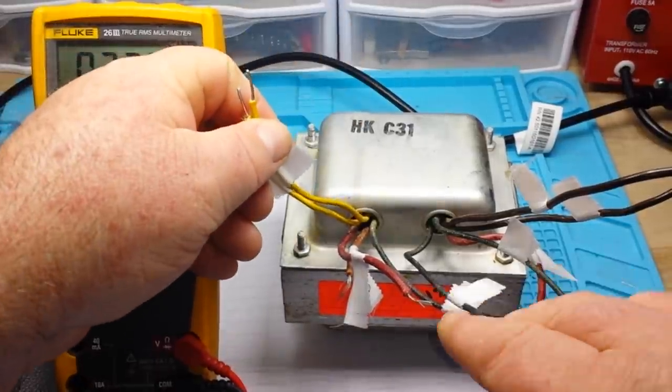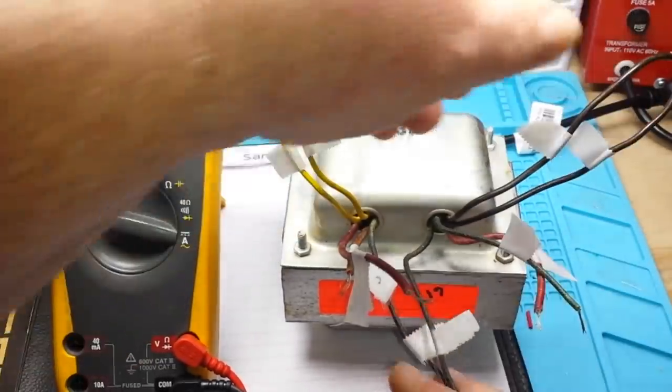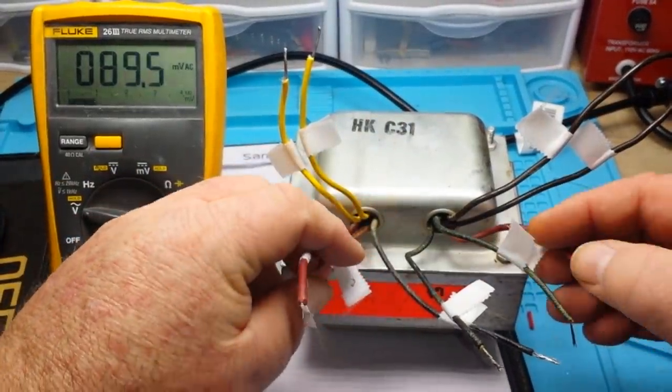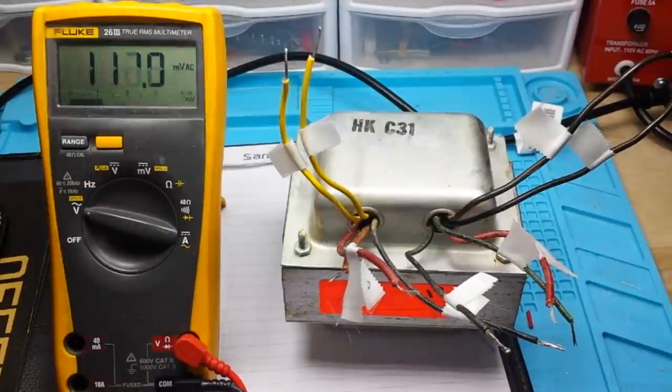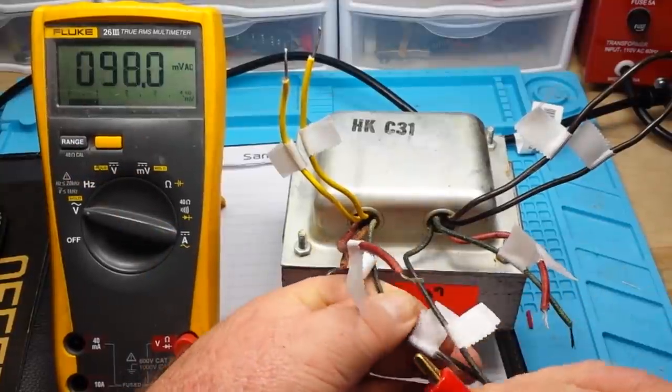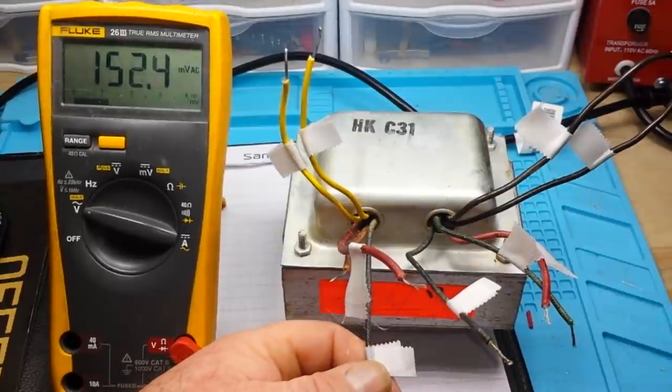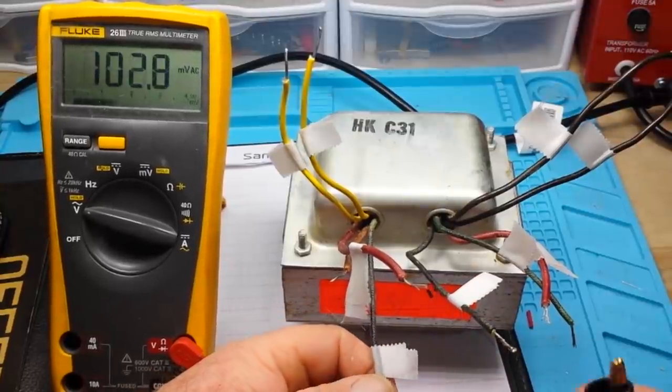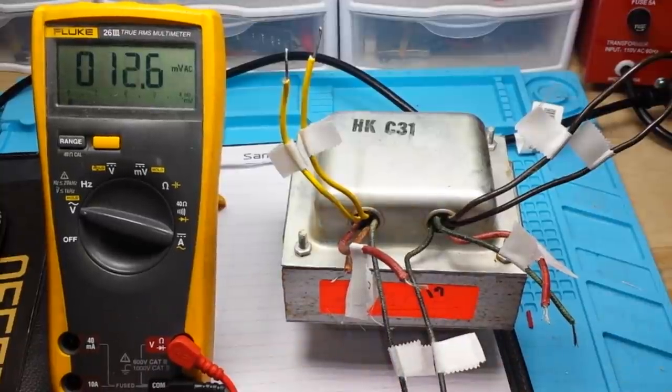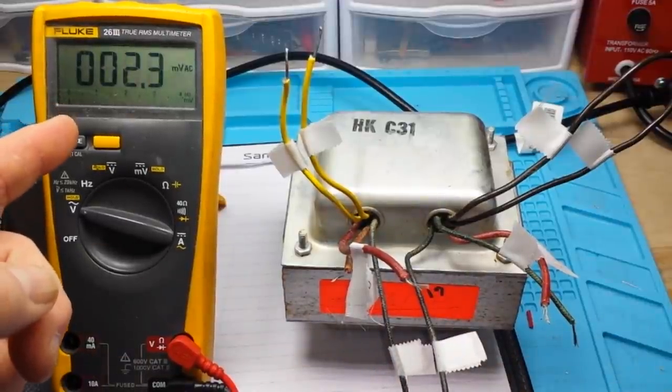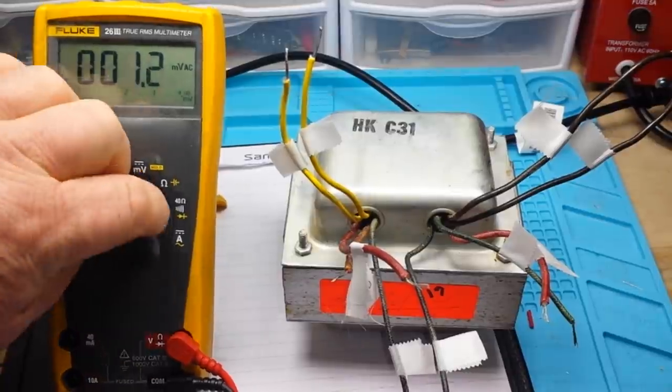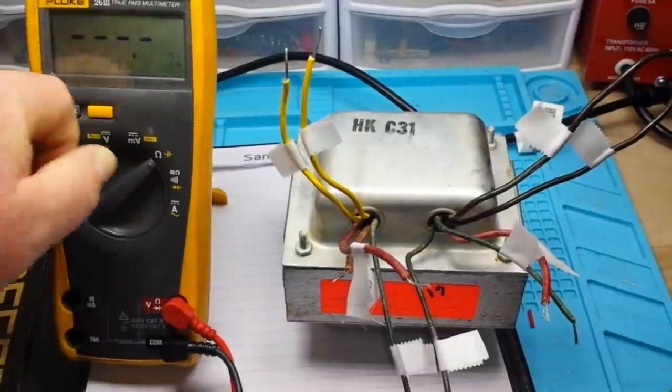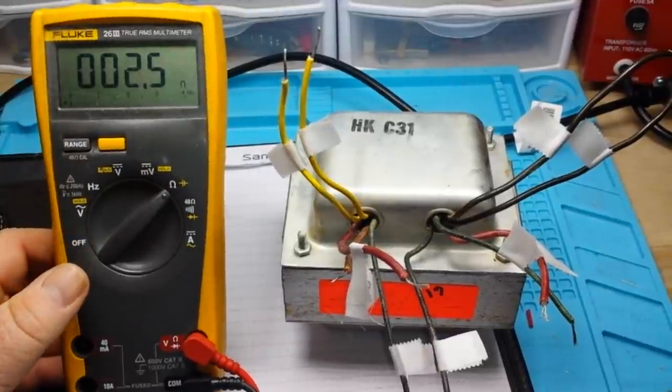We're going to assume that like pairs of wires go together. We're not just going to assume, we're going to test it. Let's start with what I believe are the primary wires, which are the smaller pair of black wires. And we're seeing two and a half ohms.